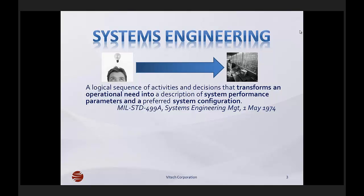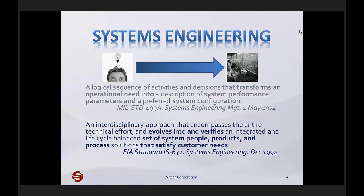Systems engineering has been defined in a variety of different formats. MIL standard 499 is one of the older definitions of systems engineering, and it defines it as transforming an operational need into system performance parameters and a system configuration. EIA standard 632 defines systems engineering as evolving and verifying a set of systems or people or products or processes that work together to satisfy customer needs.